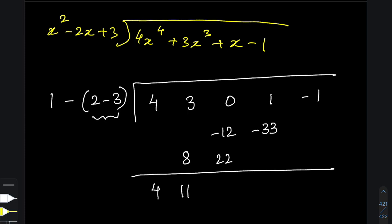Now, add 0 minus 12 and 22, which gives you 10. Now, again, multiply 2 minus 3 with 10. That gives you 20 minus 30.